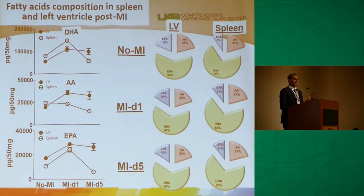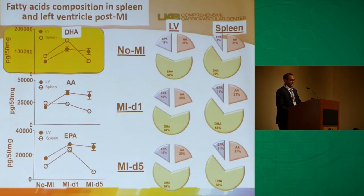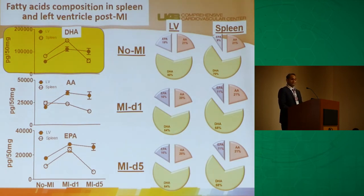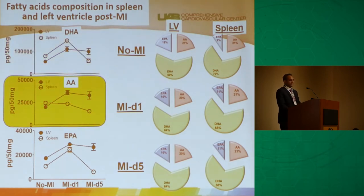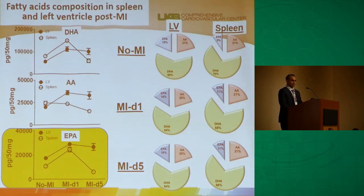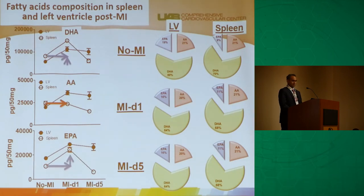The most important question is: what do leukocytes carry with them? That's where the lipidome comes in. They bring large quantities of fatty acids. Fatty acid composition in the spleen and left ventricle shows more than one hundred thousand picograms per 50 milligrams. Docosahexaenoic acid and arachidonic acid are increased within 24 hours and sustained through day five, mainly in the infarcted LV — confirming that leukocytes bring substantial fatty acids to the site.